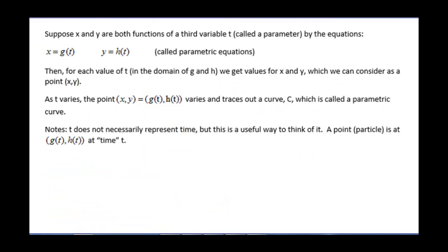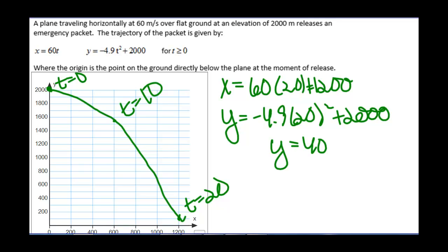More formally: suppose x and y are both functions of a third variable t, called a parameter, by the equations x equals g of t and y equals h of t. These are called parametric equations. For each value of t in the domain of g and h, we get values for x and y, considered as a point (x, y). As t varies, the point (g(t), h(t)) traces out a curve C, called a parametric curve. Note that t doesn't necessarily represent time, but it's useful to think of it as a particle at position (g(t), h(t)) at time t.